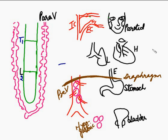The sympathetic nervous system begins in the T1 to L2 segments of the spinal cord. Associated with it are ganglia present beside the vertebral column, known as paravertebral ganglia. There are also other ganglia related to the blood vessels arising from the aorta, which lie in front of the vertebral column — these are known as prevertebral ganglia.